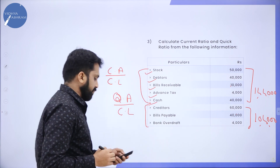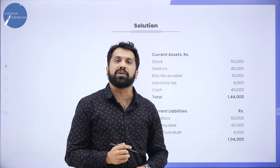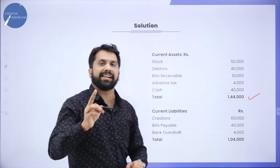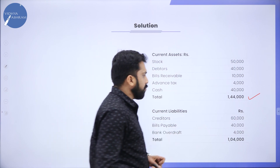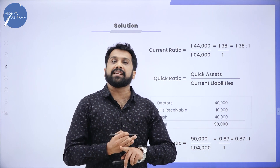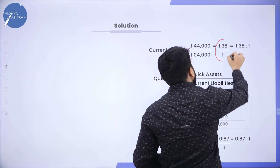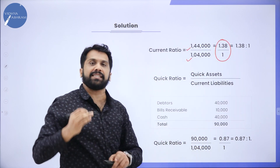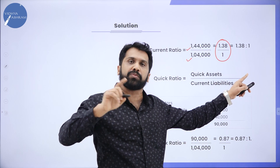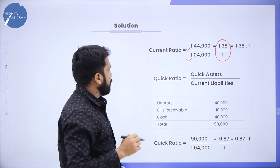Now we'll go for the solution. Current Asset as per our calculation is 1,04,000 and Current Liability is 1,04,000. Applying the Current Ratio formula — Current Asset divided by Current Liability — your answer is 1.38 divided by 1, or 1.38 is to 1. The denominator, your base, should always be 1.